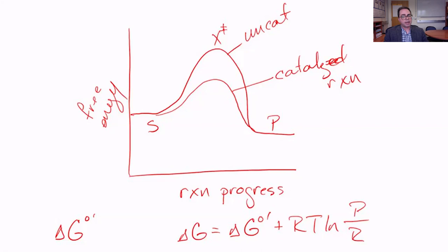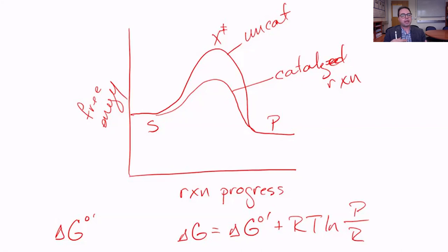Interestingly, enzymes increase the speed of both the forward and reverse reactions. Therefore, enzymes do not affect the final amount of product formed or the ratio of product to reactant at equilibrium — in other words, they don't change the equilibrium constant K. This is a common misconception: many people think that enzymes increase the amount of product produced. No — they increase the rate at which product is made, but they can't make any more product than would have otherwise been made by the uncatalyzed reaction. They're just making it faster.